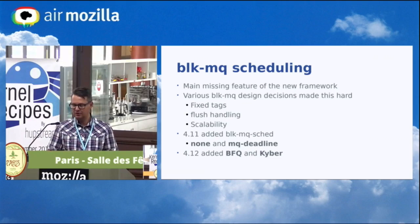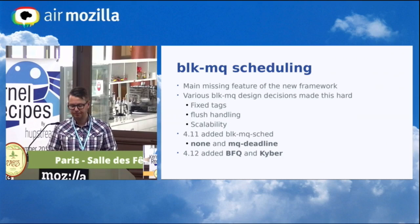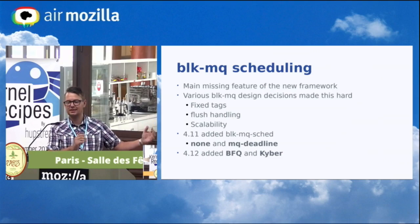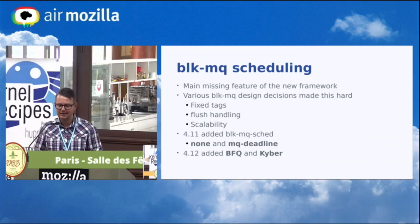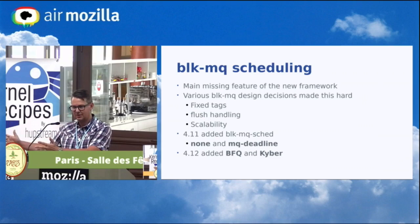One of the main new features we've added has been IO scheduling — this was the main missing feature of the new framework. It's easy to tell people to convert drivers over to the new framework, but if we don't have the scheduling that most users require then it's not really going to work. There are a couple of design decisions in block MQ that made this really difficult. In the old stack you have a big pool of scheduled requests, and you assign a tag when you hand it to the driver. On block MQ, everything is centered around the tag from the get-go, meaning a one-to-one mapping between the kernel request and the device request — that becomes a big problem for scheduling.